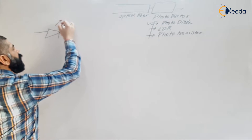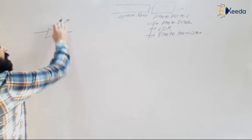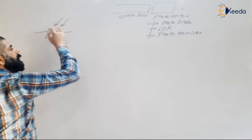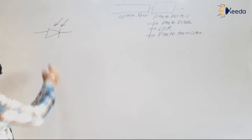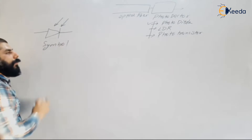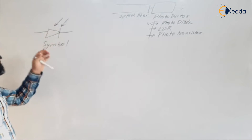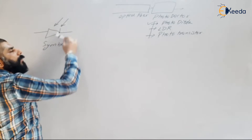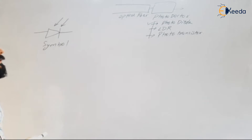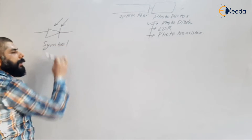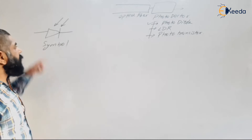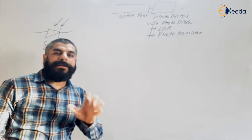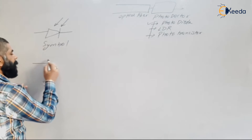This is the symbol of a photo diode — it is the diode with arrows pointing inward, representing light falling on it. This is the opposite of the LED symbol: in an LED, the arrows point outward because light is emitted, whereas in a photo diode, light falls on it and only then does it conduct.